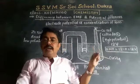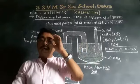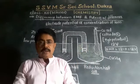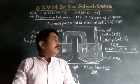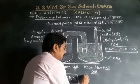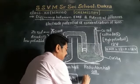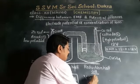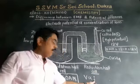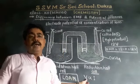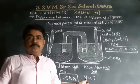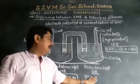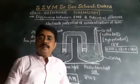If the cell is not working, current flow does not occur. From our studies, we know that voltage V is directly proportional to current I. Therefore, a potential difference is necessary for current to flow between the electrodes of the cell.